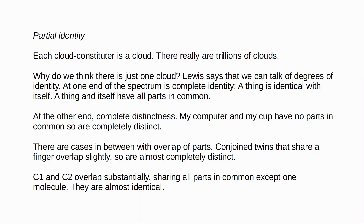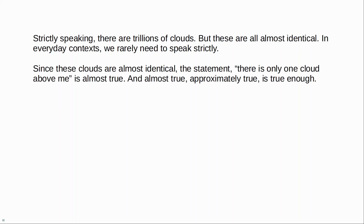Lewis says: strictly speaking, there are trillions of clouds where there seems to be one, but any two of these clouds are almost identical — they share almost all of their parts in common. And in everyday contexts we rarely have cause to speak strictly about things. Since all of the trillions of clouds are almost identical, a statement like 'there is one cloud above me' is almost true — approximately true, which is true enough for everyday purposes. If we're doing philosophy, of course, we will want to draw finer distinctions. But in almost every other context — whether talking about the sky, predicting the weather, or conducting an experiment involving clouds — it's true enough to say that there is one cloud. We don't lose anything by making this simplification. So as Lewis puts it, there are many clouds, but almost one.